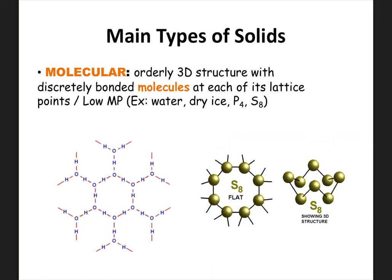There are other types of solids called molecular solids. These are covalent substances that can be a solid. They typically have orderly structures, but they have molecules at each of the lattice points, and they have a relatively low melting point because in order to melt them, you're breaking the IMFs — not bonds. Breaking IMFs takes some energy, but not as much as breaking a bond. Examples include water, which is a covalent molecule that can be a solid, and dry ice, which is CO2 in solid form.